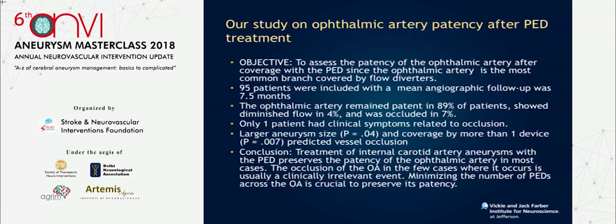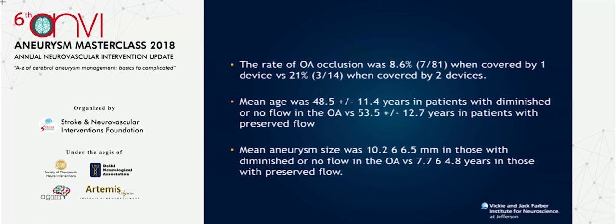Occlusion was correlated with the size of the aneurysm — the larger the aneurysm, the higher the chance of occluding the ophthalmic artery. Coverage by more than one device also predicts occlusion: the rate was 8.6% when covered by one device, and 21% when covered by two or more devices. We also found that older patients had more preserved flow in their ophthalmic artery than younger patients.